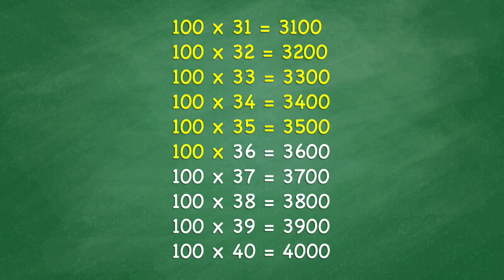100 times 36 equals 3,600. 100 times 37 equals 3,700. 100 times 38 equals 3,800. 100 times 39 equals 3,900. 100 times 40 equals 4,000.